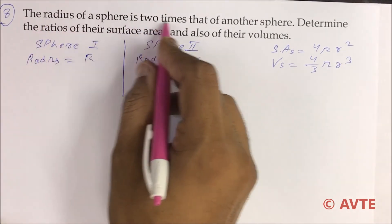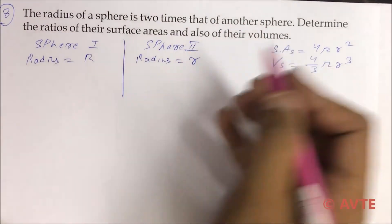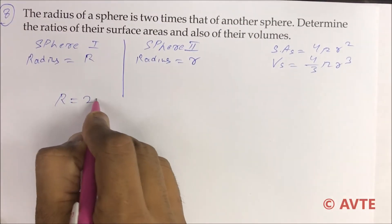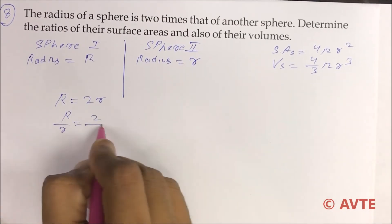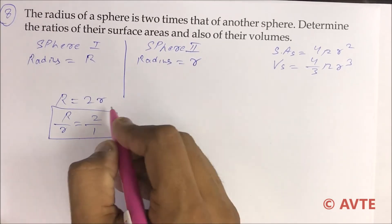The given condition: the radius of a sphere is 2 times the radius of another sphere, that means R is equal to 2r. That means R by r is 2 by 1. This is according to the given condition.